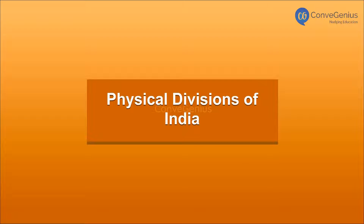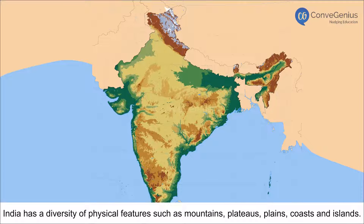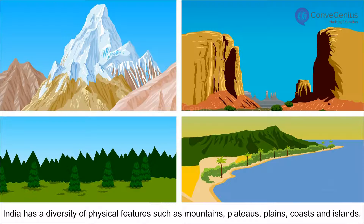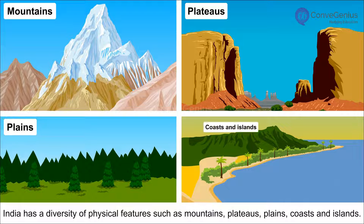Physical Divisions of India. India has a diversity of physical features such as mountains, plateaus, plains, coasts and islands.